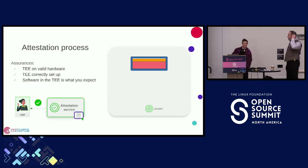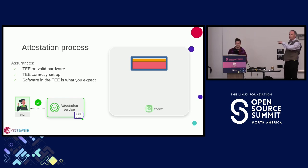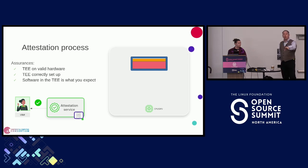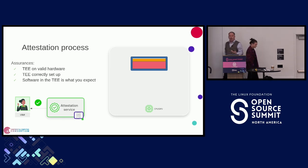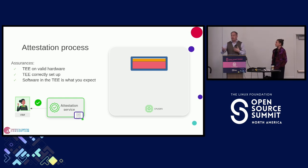The attestation service must be a third party — owned by someone other than whoever is providing your compute. For example, Microsoft Azure has confidential computing capabilities, but we'd prefer they're not the ones attesting it's correct — otherwise it's like marking your own homework. We want third-party attestation services. Exactly how the business models work for that is something we're exploring in the Confidential Computing Consortium.